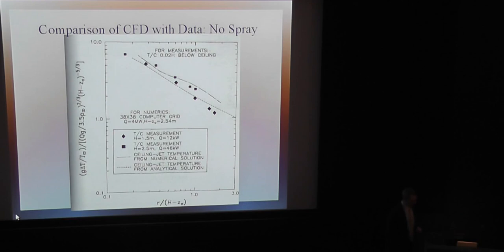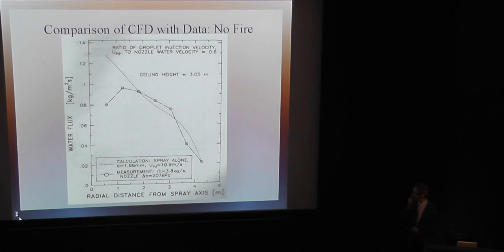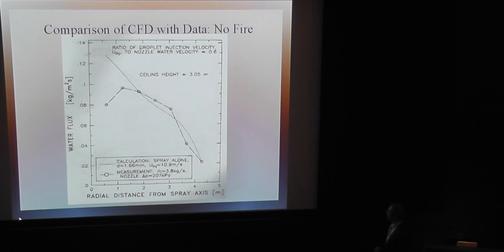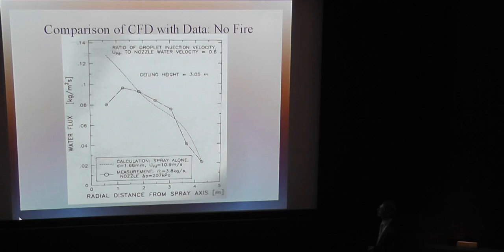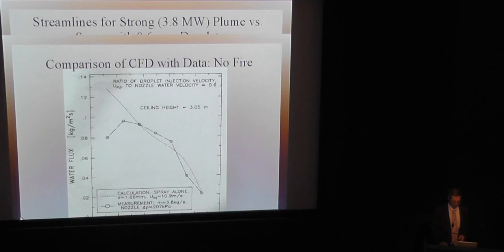We also did some computations where there was no fire at all — just the spray alone. We wanted to look at the variation of water flux at the floor level, how it varied with distance from the axis of the spray. These are the calculations, and these are the measurements that were made of how the water flux varied with radius. At least that's something we attempted to do to see how reliable the calculation was.